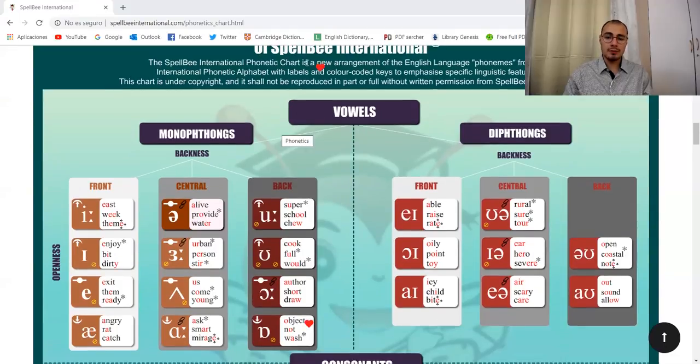We have vowels. Vowels are divided in two, in monophthongs and diphthongs. One sound and a glide of two sounds.